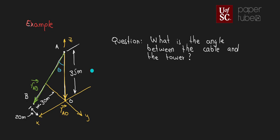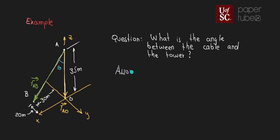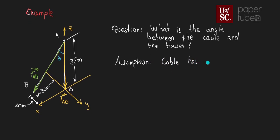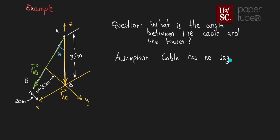Before writing the vectors, let's note our assumption: the cable has no sag. Otherwise the angle of connection would change. So one assumption is that the cable is a straight line.